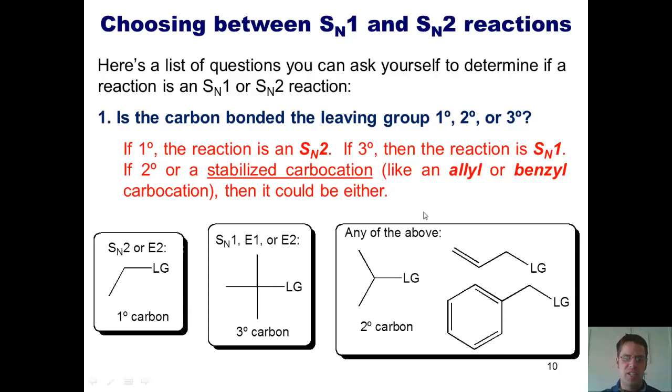These pictures kind of sum it all up. If I've got a leaving group stuck to a primary carbon, it's going to be SN2 or E2. Keep in mind, E2 is something we'll talk about in the next chapter, so at this point you don't have to freak out about it. If I've got a tertiary carbon, it's going to be SN1, E1, or E2. Please ignore the E1 or E2 at this juncture. And if it's any of these guys, then it could be any of the above.